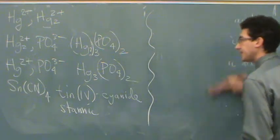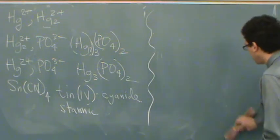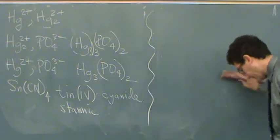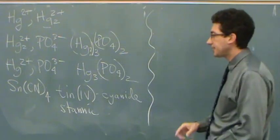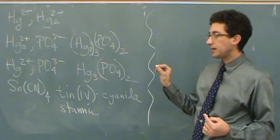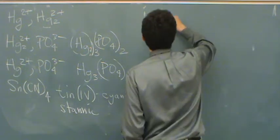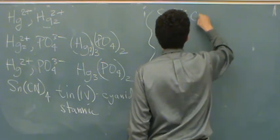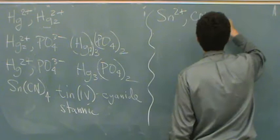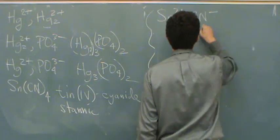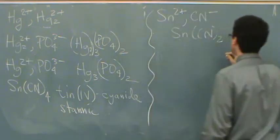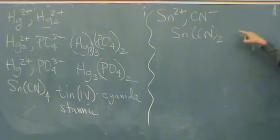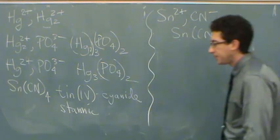Just for fun, let's try to do stannous cyanide together so you can see what the other one would look like. Stannous would be tin 2 plus and a cyanide, so that would be Sn(CN)2. So that's the second one I wrote, it's stannous cyanide or tin 2 cyanide. Alright, let's try some more.